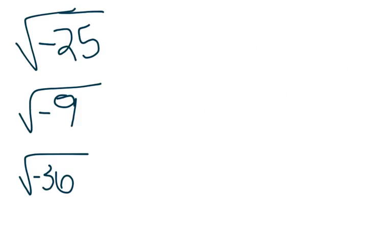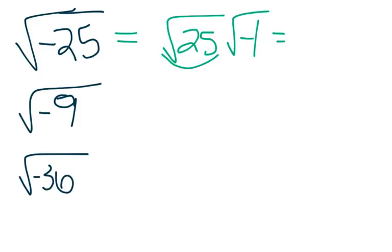Let's practice a few. The square root of negative 25 is the same as saying square root of 25 times the square root of negative 1, and the square root of 25 is 5. The square root of negative 1 is our imaginary number, i.